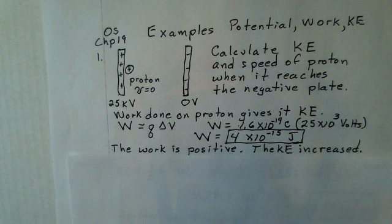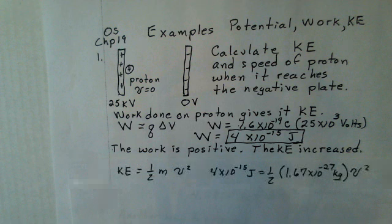Again, the work is positive because the kinetic energy increased. Feel free to pause the video at any point here and review the calculations. The kinetic energy can be used to calculate the speed of the proton. The kinetic energy is one-half mv squared. We're doing a non-relativistic calculation. We're not going to be moving fast enough where we need to employ special relativity.